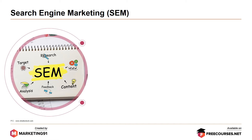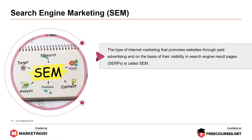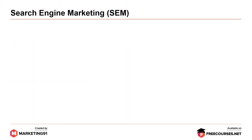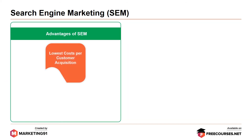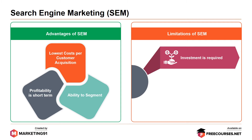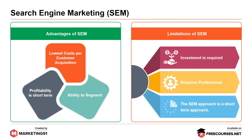Moving on to the aspect of search engine marketing. The type of internet marketing that promotes websites through paid advertising on the basis of visibility in the search engine result page is called SEM. SEM is a combination of paid results obtained with tools like Google AdWords or Bing Ads and organic search results, which is SEO. The advantages of SEM are low cost per customer acquisition, ability to segment, and profitability is short-term. The limitations of SEM are investment is required, it requires a professional, and finally the SEM approach is a short-term approach.